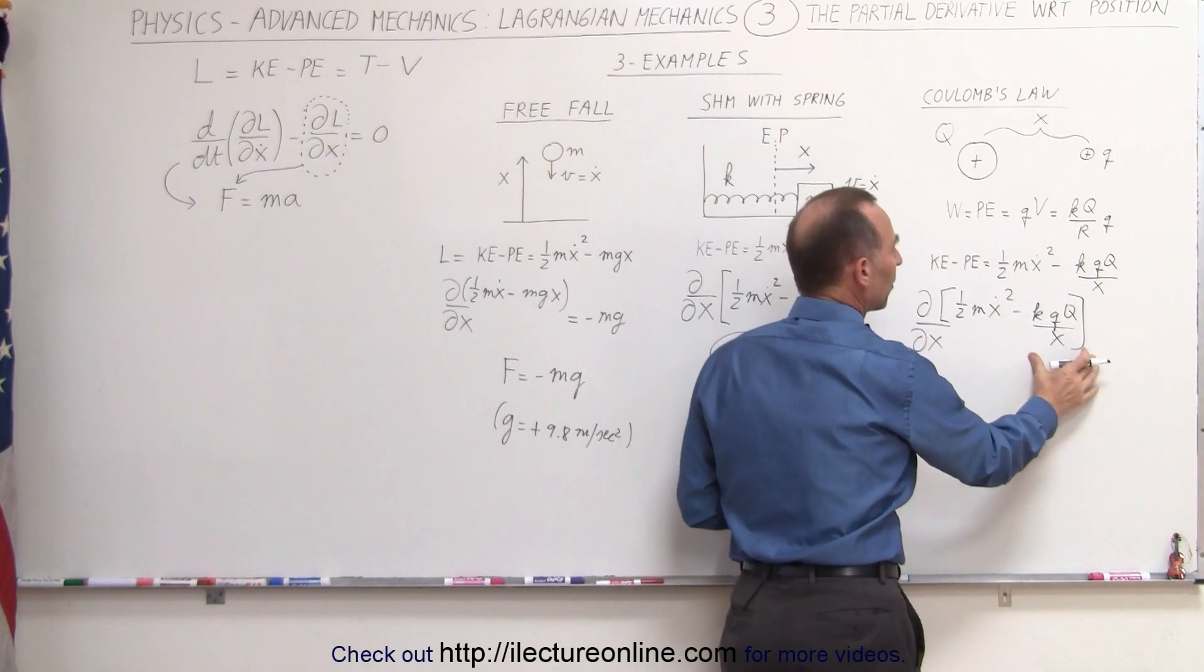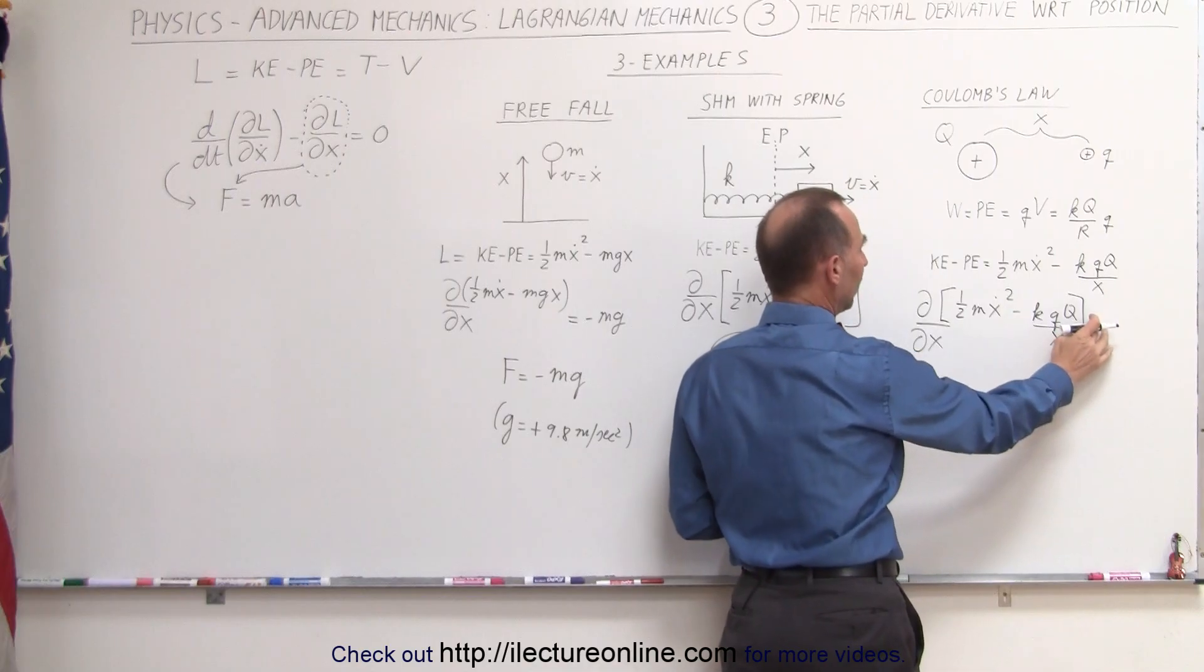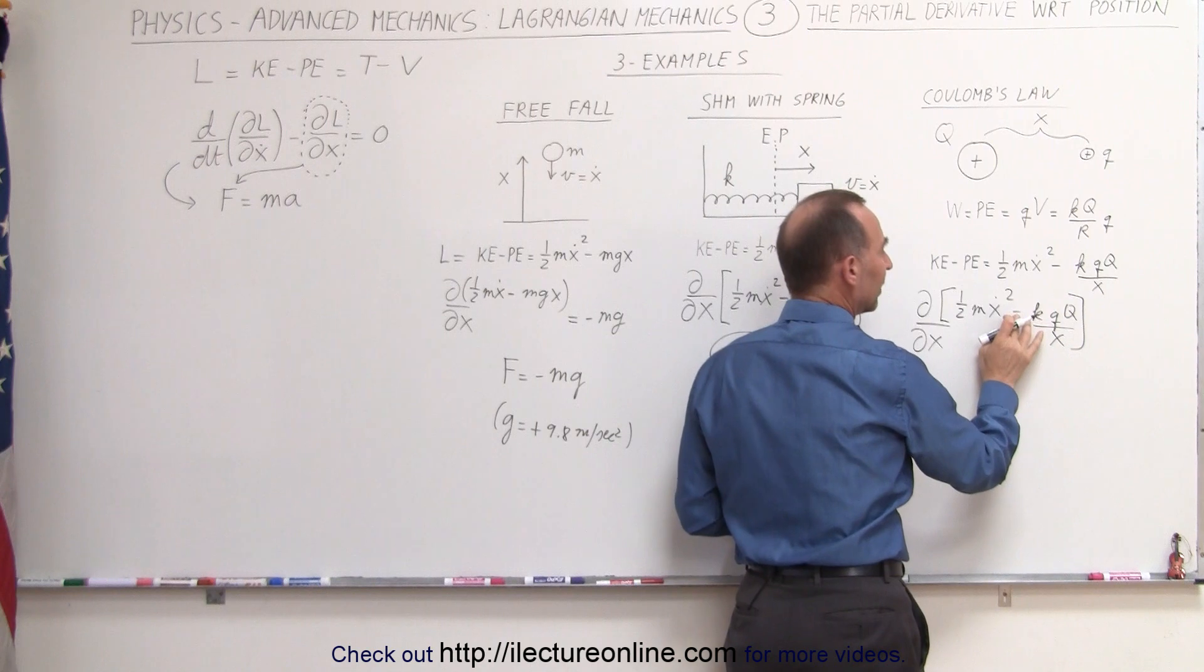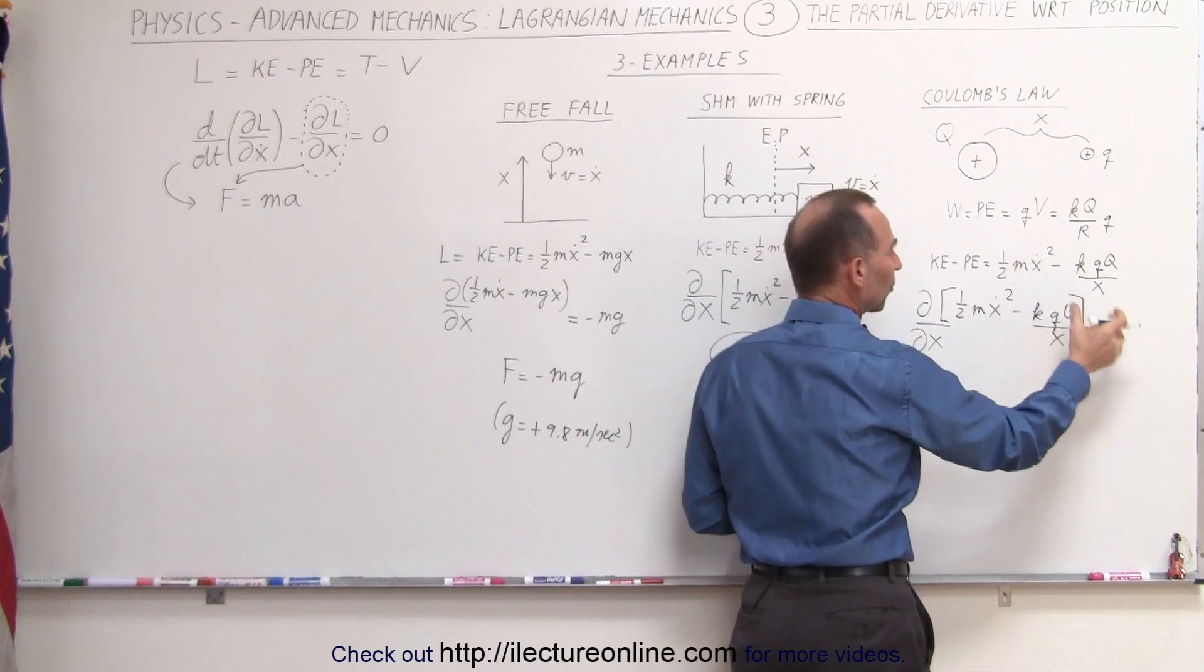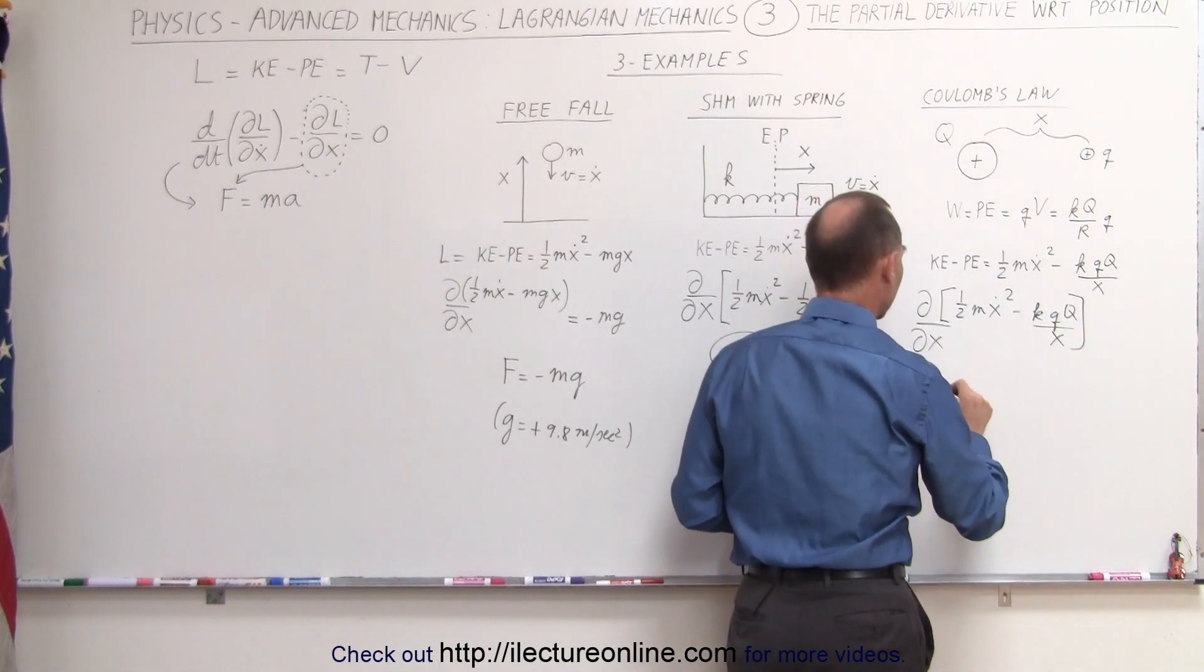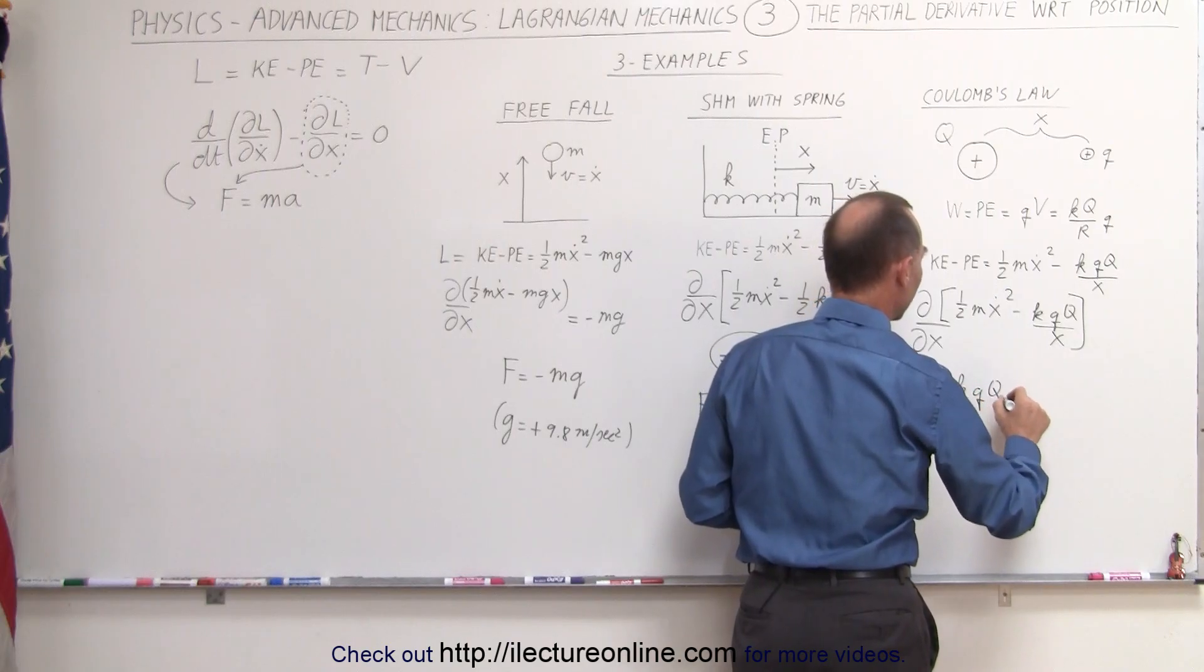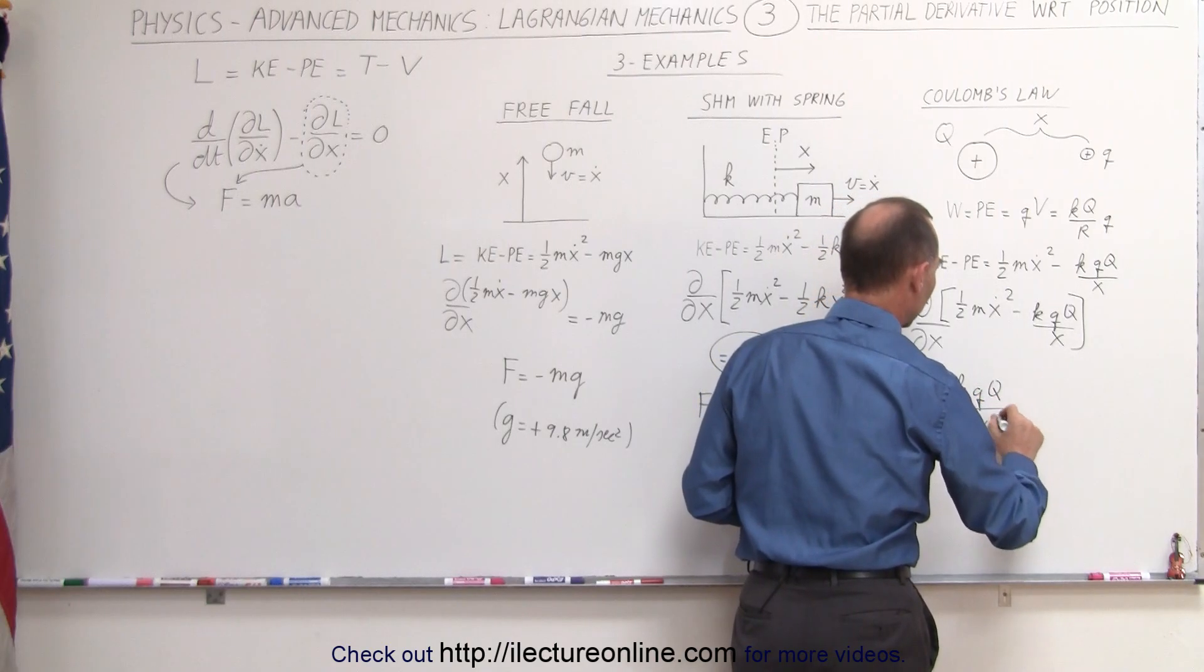Minus k little q big Q over x. And we take the derivative of this. Remember, this is like x to the minus 1. Take the derivative. We take the minus 1 exponent, multiply the minus 1 here, and then subtract 1 from the exponent. This becomes equal to a positive k little q big Q over x squared.